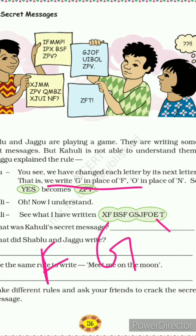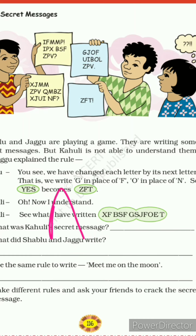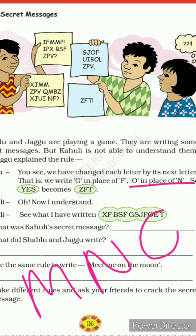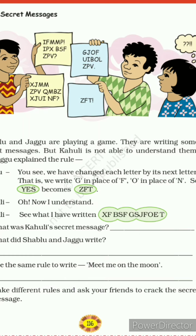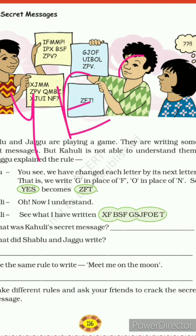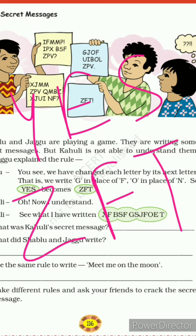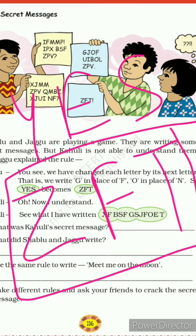F ke baad aapka aata hai G. So, Y E S — Y ke baad aapka aata hai Z, E ke baad aapka aata hai F, and S ke baad aapka aata hai T. So aapka YES ho gaya hai Z E F T.